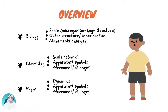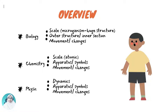Sometimes the biological mechanism can also be illustrated — for instance, the circulation of blood. In chemistry, scientific drawing always involves apparatus setup and symbols. For instance, we use an arrow to represent heat. Similarly, in physics, the drawing could be extended to show dynamics, movement, and even changes.